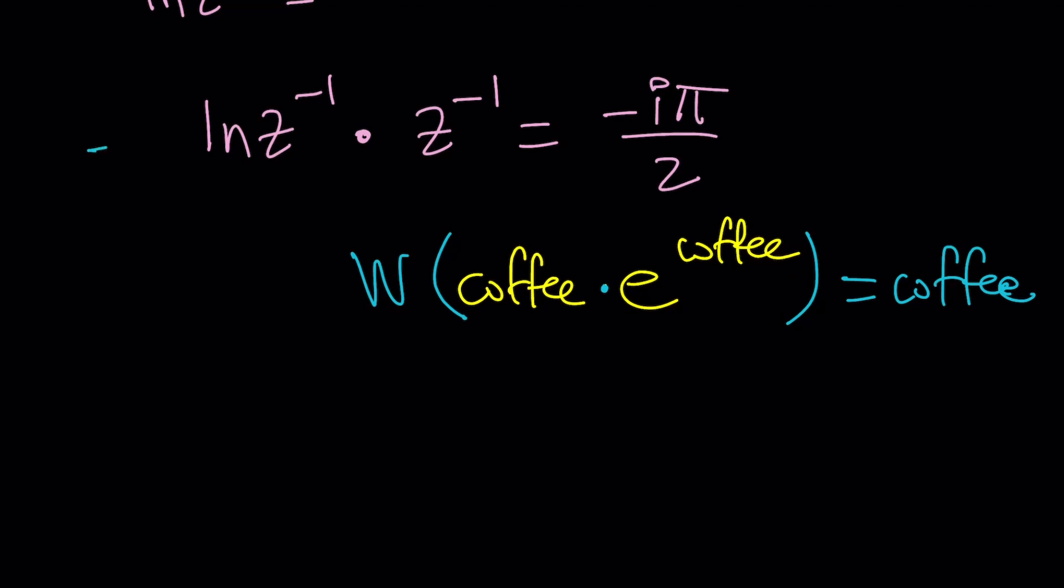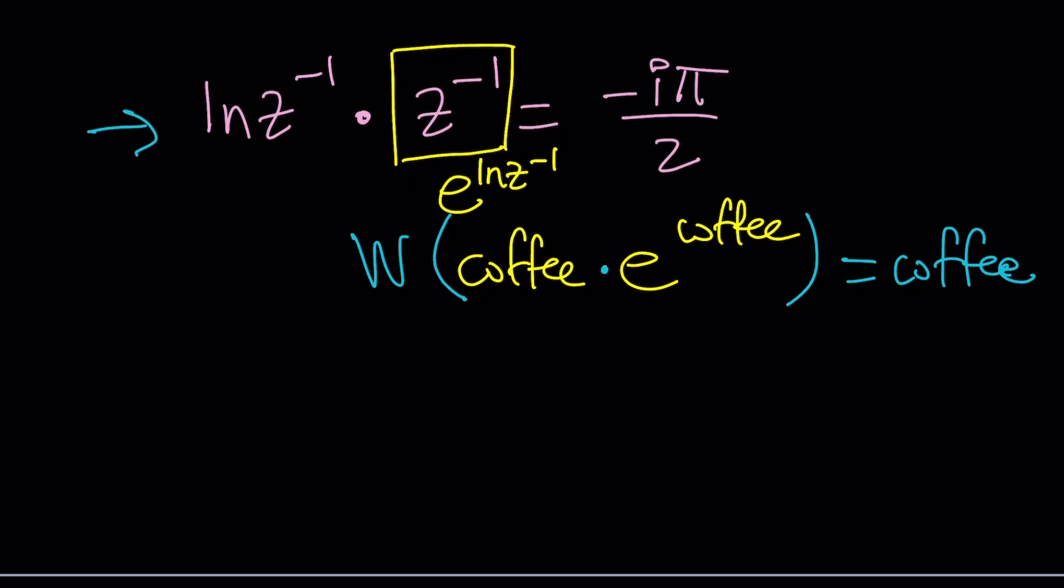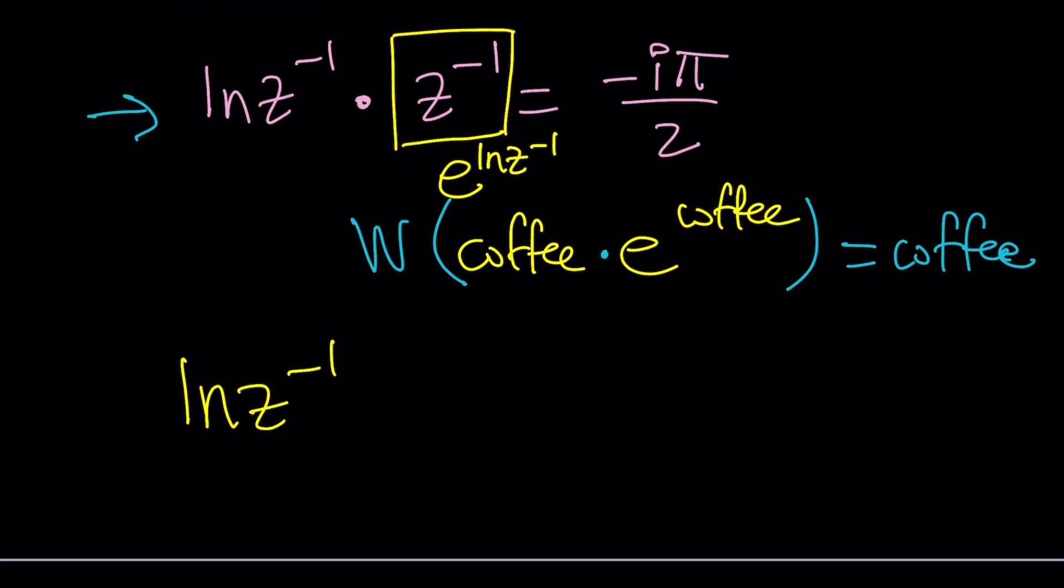So we need to do a little bit more work here and that can be done by considering the following. z to the power negative 1 can actually be written as e to the power ln z to the power negative 1 because that's the same thing right? e to the ln z is z giving us e to the power negative 1. So let's do that. We have now ln z to the power negative 1 multiplied by e to the power ln z to the power negative 1. And guess what? This is going to be your coffee.